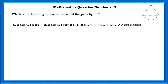Mathematics question number 13. Which of the following options is true about the given figure? Option A: it has 5 faces — this is wrong. Option B: it has 5 vertices — this is also wrong. Option C: it has 3 curved faces — this is also wrong. So the answer is option D: none of these.